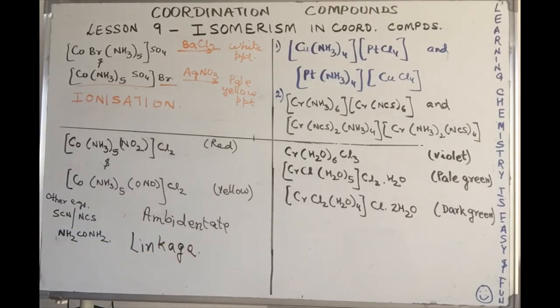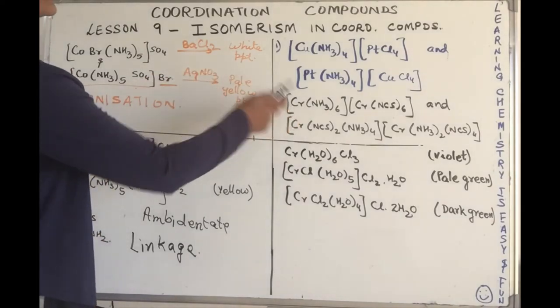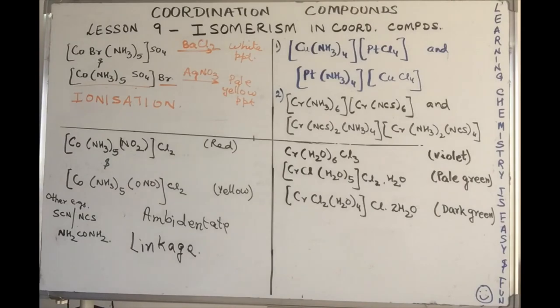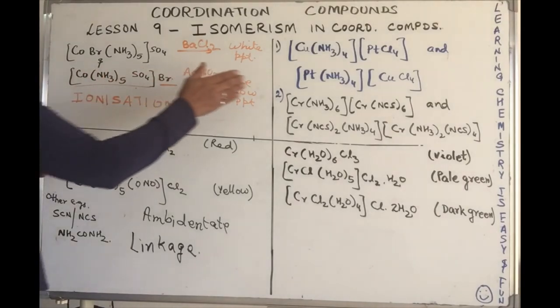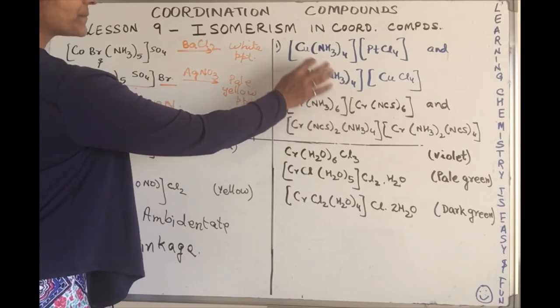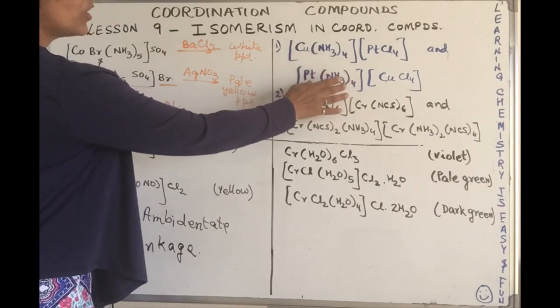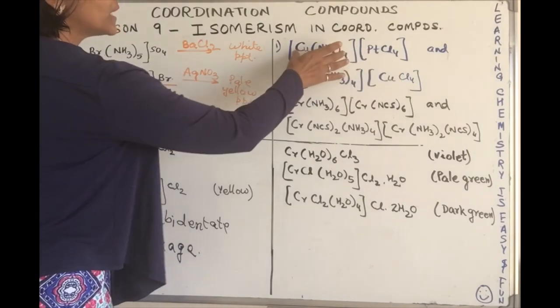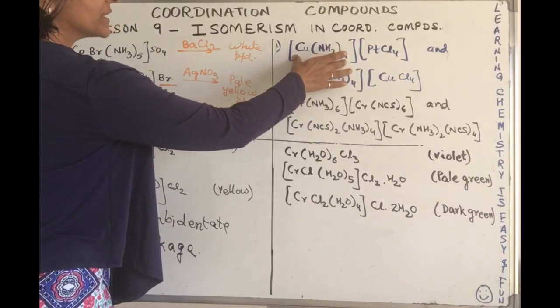I am so glad to see the smile on your face. We are already halfway through. Let's go on to the next. Just see the structures. I've taken two examples over here. Let's concentrate on the first one: [Cu(NH3)4][PtCl4]. What I notice over here is that the cation as well as the anion part is complex, correct?